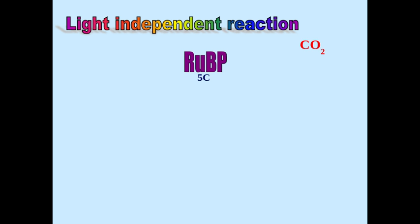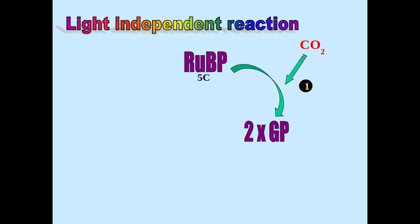First of all, we have a five-carbon compound called RuBP. RuBP is bound to carbon dioxide, which comes into the plant through the stomata — it diffuses through the stomata — so carbon dioxide combines with RuBP to form two lots of GP. This uses an enzyme called Rubisco. Rubisco is actually quite a poor enzyme, but it will still be impacted by things like temperature. This process is called carbon fixation, where the carbon from carbon dioxide is fixed into RuBP to make two lots of GP, which are a three-carbon compound.